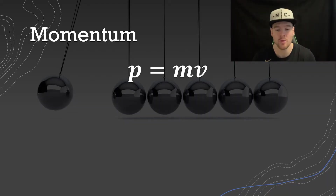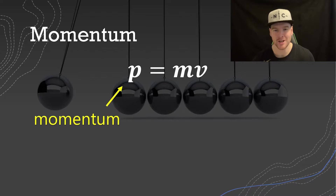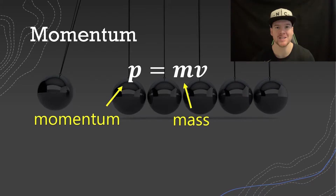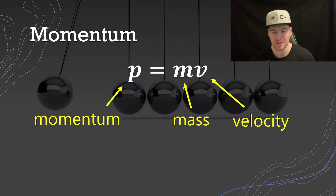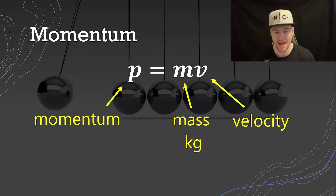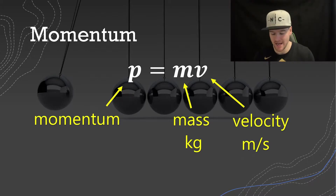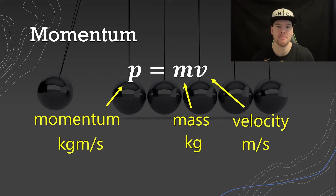Our equation for momentum is P equals MV. P represents momentum — M was already used for mass, which is what the M represents in this equation, and it's mass multiplied by velocity. Let's make sure we have the right units: mass is in kilograms, velocity is in meters per second, which means momentum is going to be kilogram meters per second.